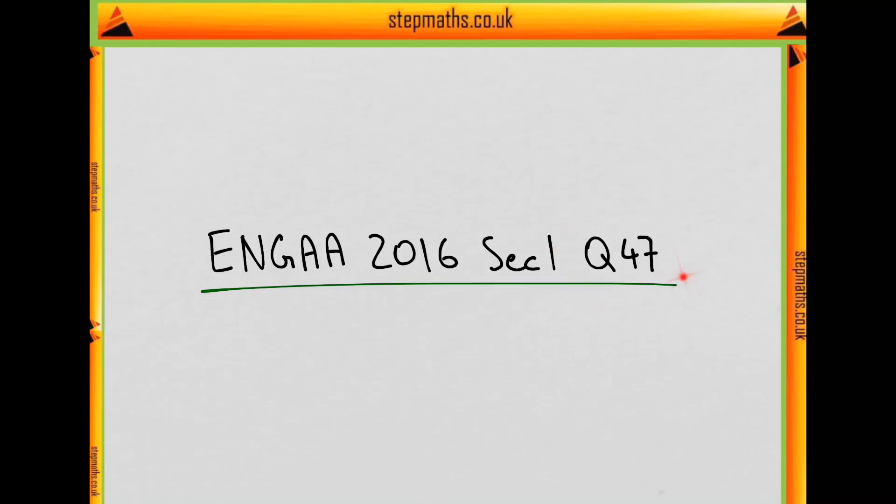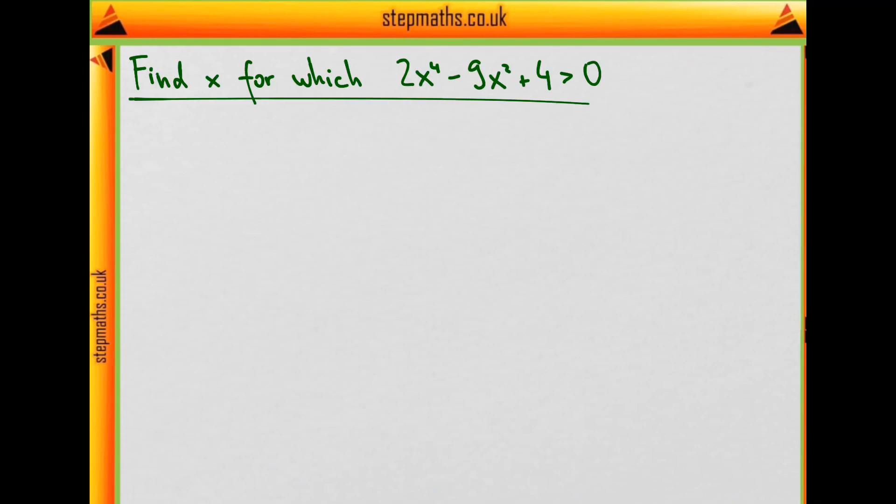In this video, we'll look at question 47 from the 2016 exam. So in this question, we are simply supposed to find all the x for which this polynomial is positive. And as we can see, the degree of the polynomial is 4.